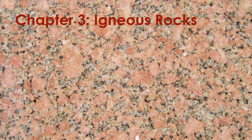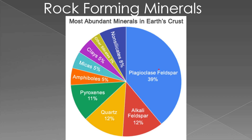A better photo for what we're going to be talking about is a granite countertop. If you look closely, you may start to recognize some things you've seen before. Those big pink blobs look a lot like the feldspars we looked at, the white areas look like quartz, and some of the black things look like biotite or hornblende — those darker minerals. That's the kind of stuff we're going to be talking about this chapter.